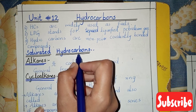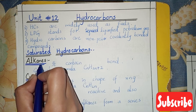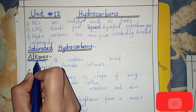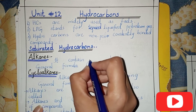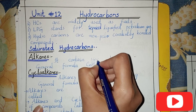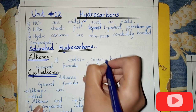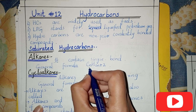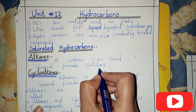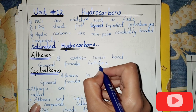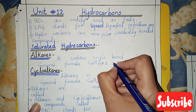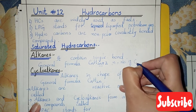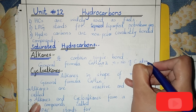Hydrocarbons are divided into saturated hydrocarbons and unsaturated hydrocarbons. Saturated hydrocarbons are alkanes. Alkane is a hydrocarbon that contains only single bonds. The general formula of alkane is CnH2n+2, where n is the number of carbon atoms.